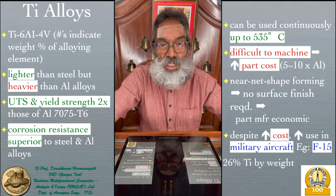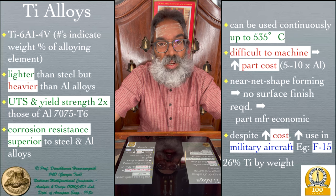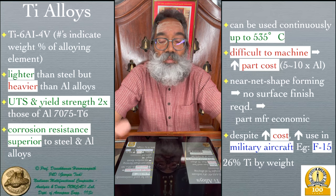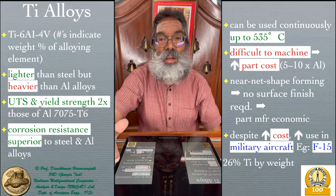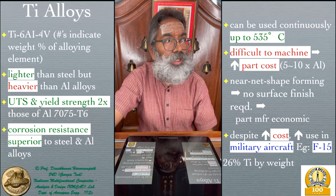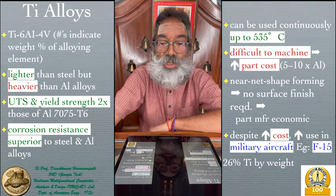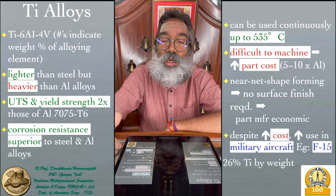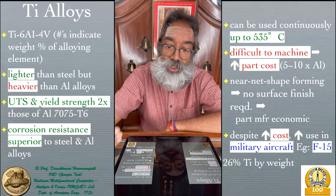Despite the higher cost, titanium alloys have been increasingly used over several decades in military aircraft flying at supersonic speeds, where aerodynamic heating — following the (1 + M²/5) factor — plays a significant role. The F-15 uses almost 26% titanium, and the SR-71 Blackbird uses even more, especially in regions close to the engine and at leading edges where stagnation temperatures are very high.